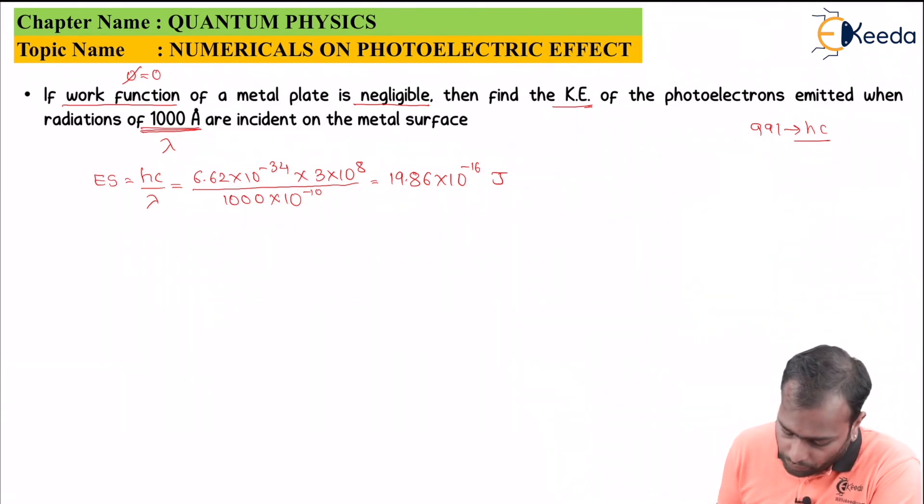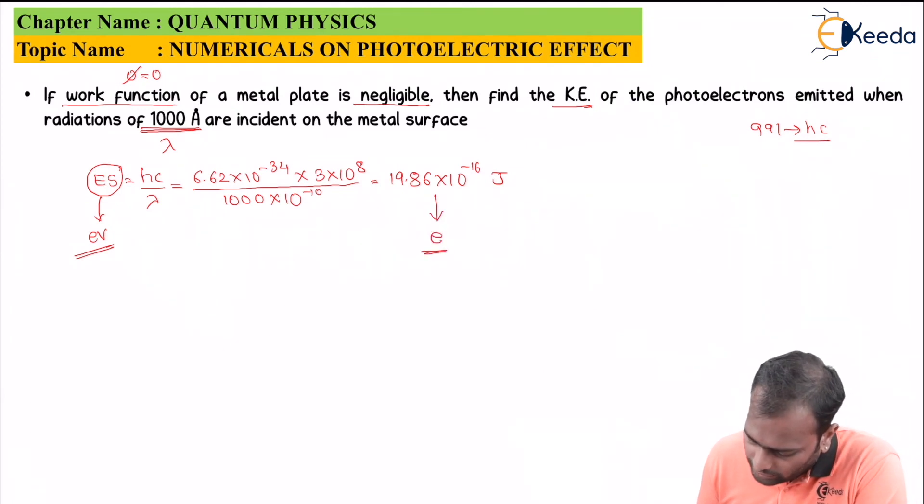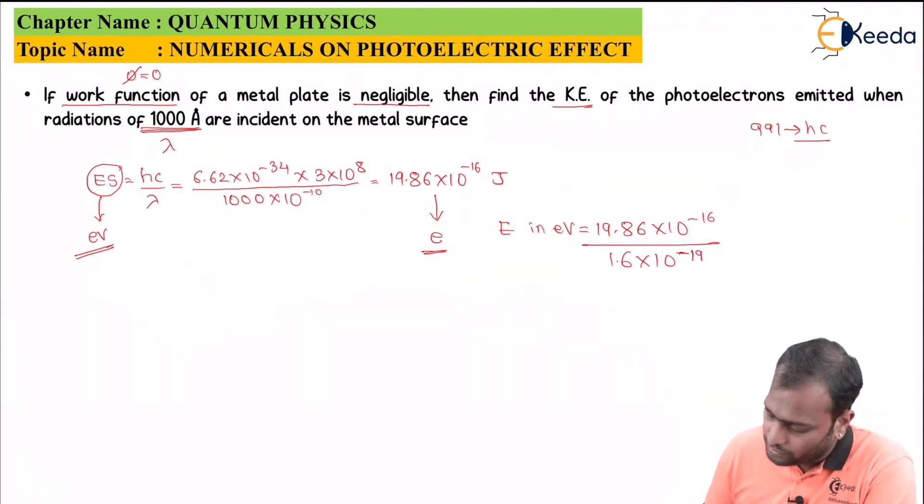Now we need to compute the value of ES in terms of electron volt. So what we will be doing? We would be just dividing this value by E. So my energy in electron volt will be equal to 19.86 into 10 to the power minus 16 divided by 1.6 into 10 to the power minus 19 which now equals to...